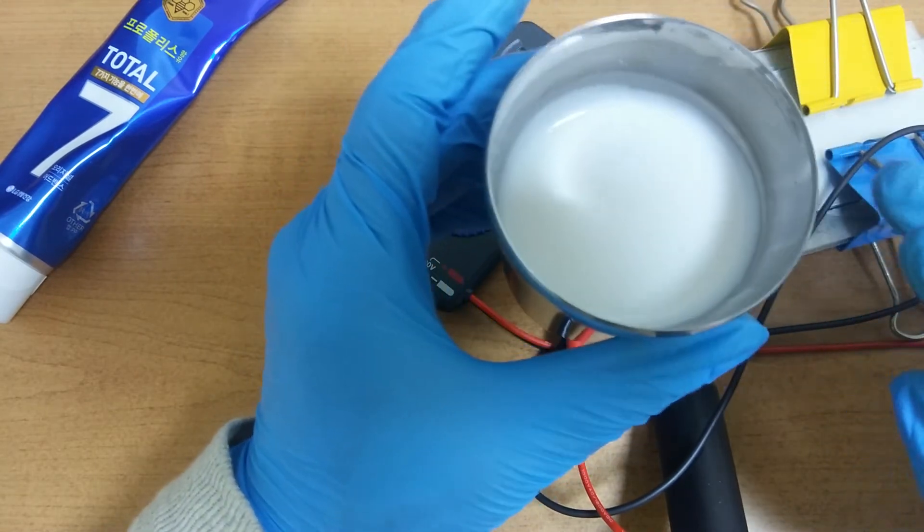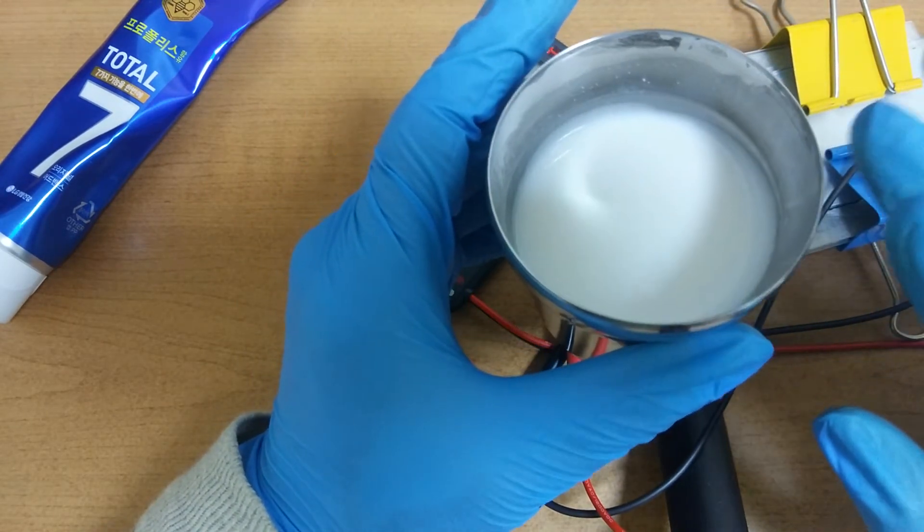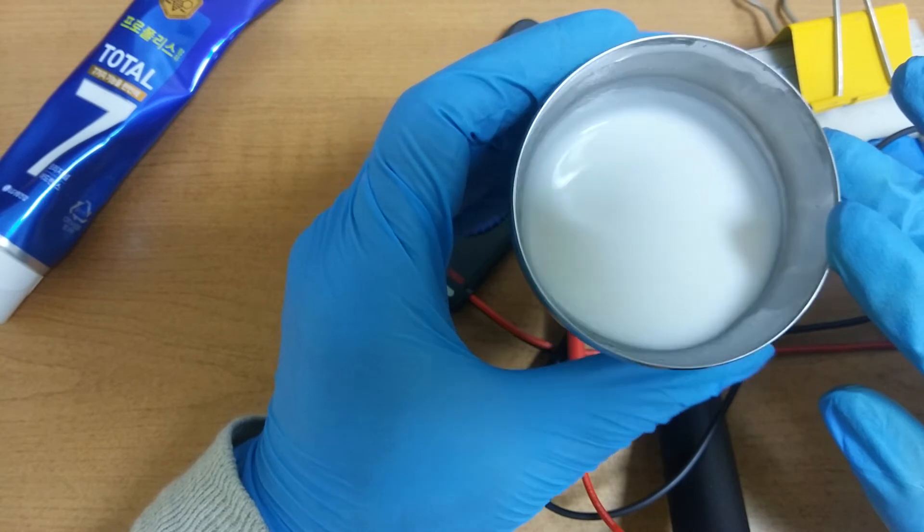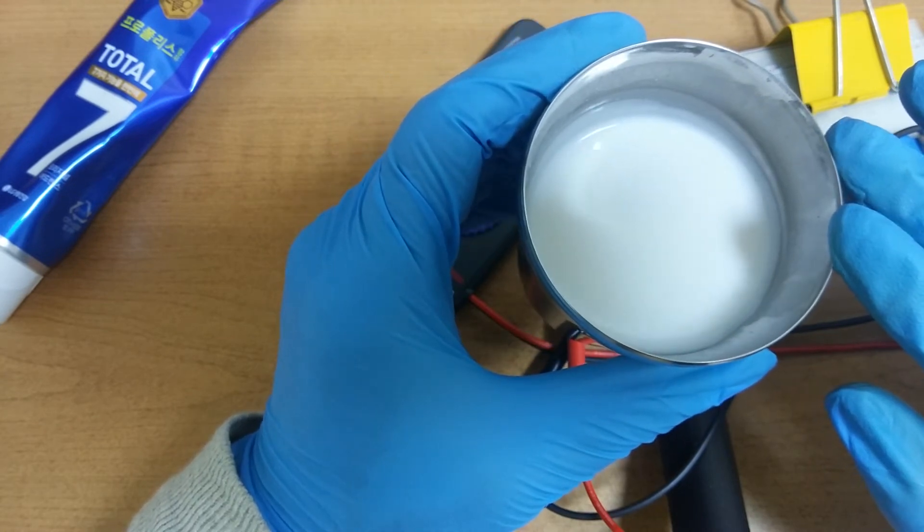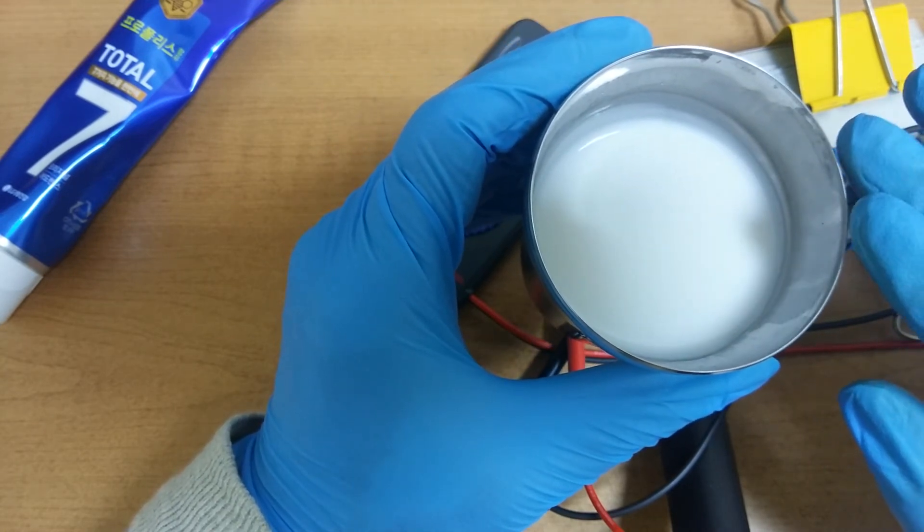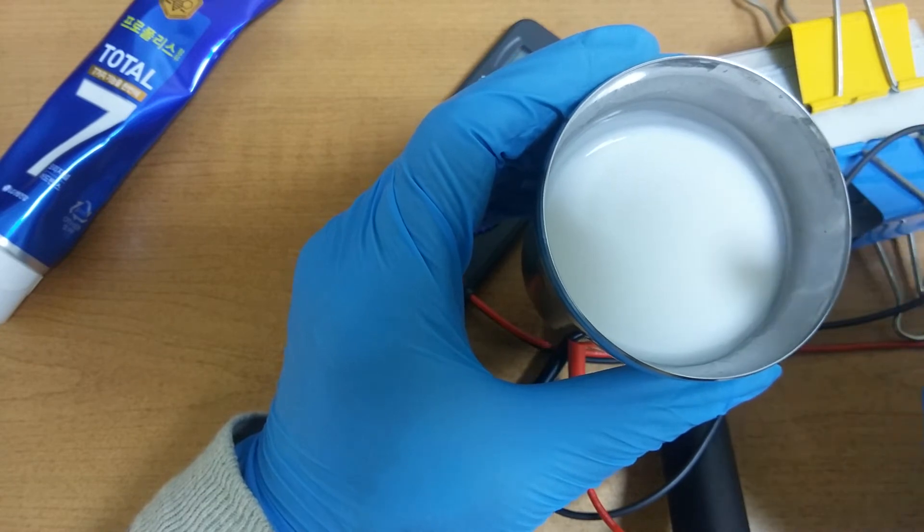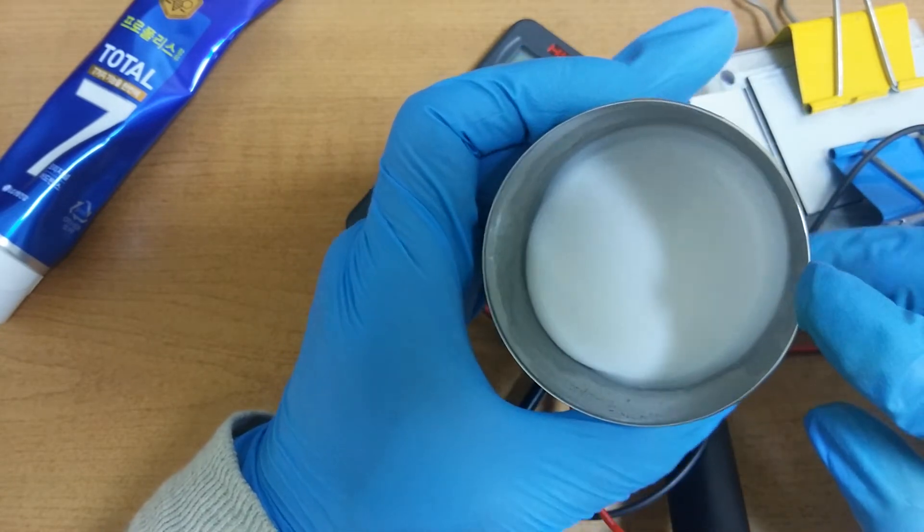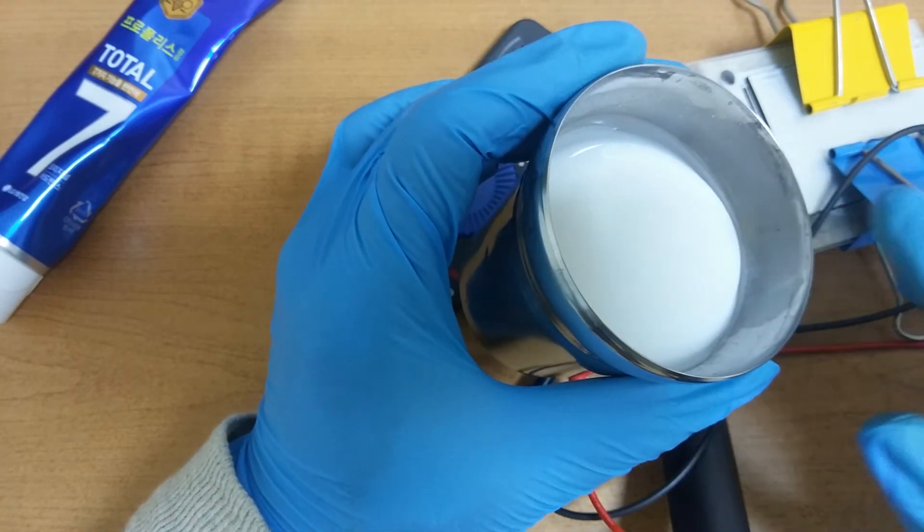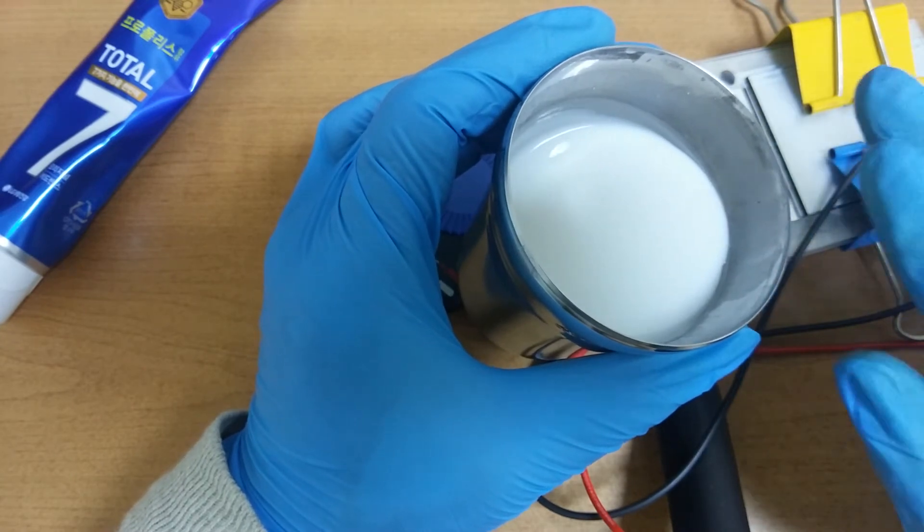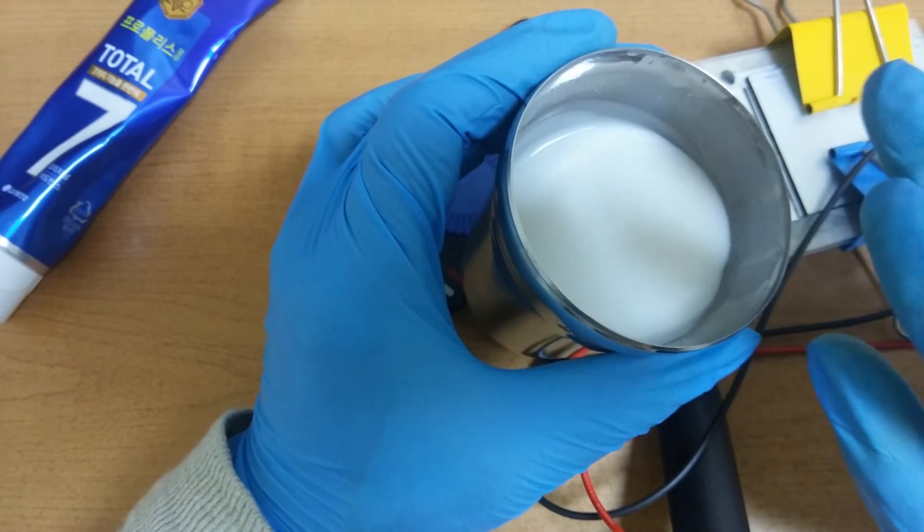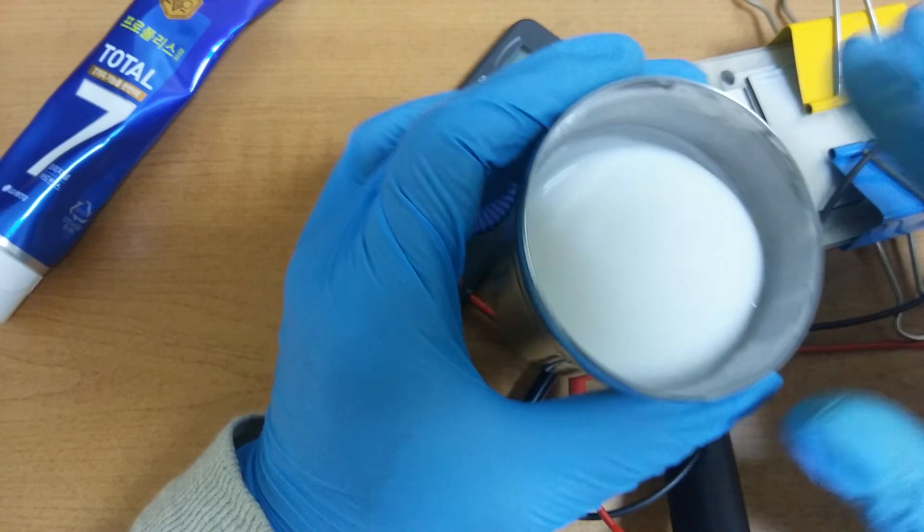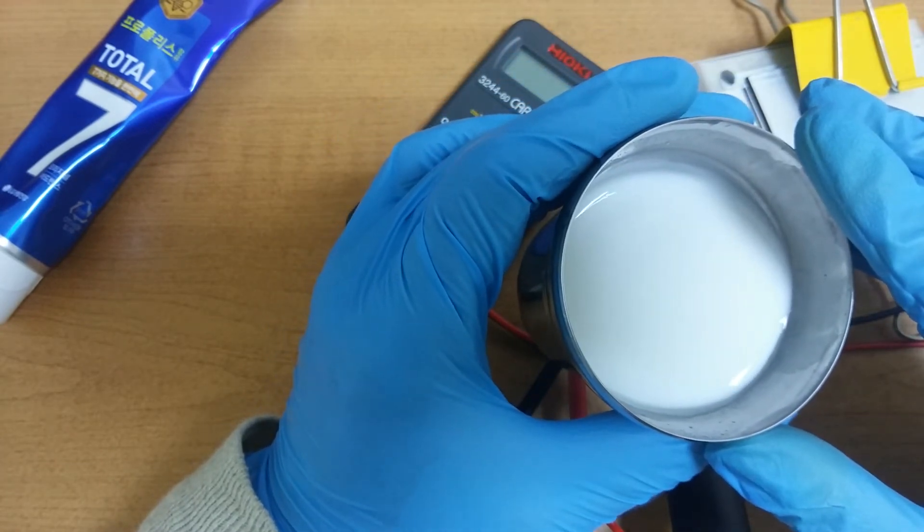By using water and detergent we can make this kind of slurry or liquid. If it is dried it becomes solid state material or cathode.